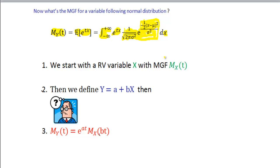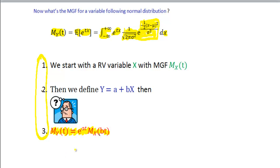We already derived the moment generating function of the standard normal variable in the previous video. Because we have the MGF of the standard normal variable, we can use the key result of moment generating functions — specifically point 3 — to get our MGF for the normal variable.